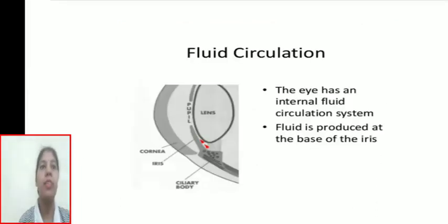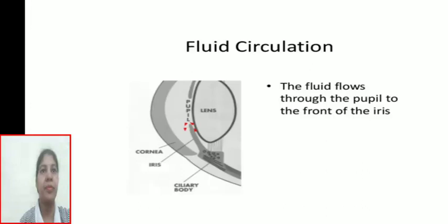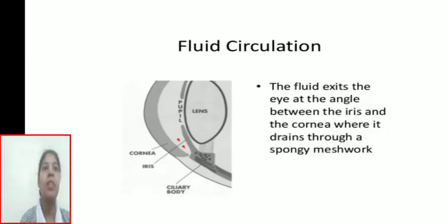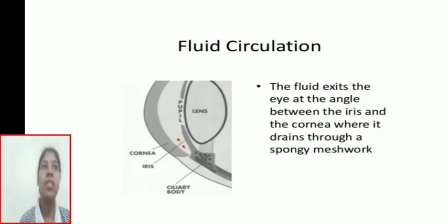Now, fluid circulation. The eye has an internal fluid circulation system. Fluid is produced at the base of the iris and flows through the pupil to the front of the iris. The fluid exits the eye at the angle between the iris and the cornea, where it drains through a spongy meshwork.